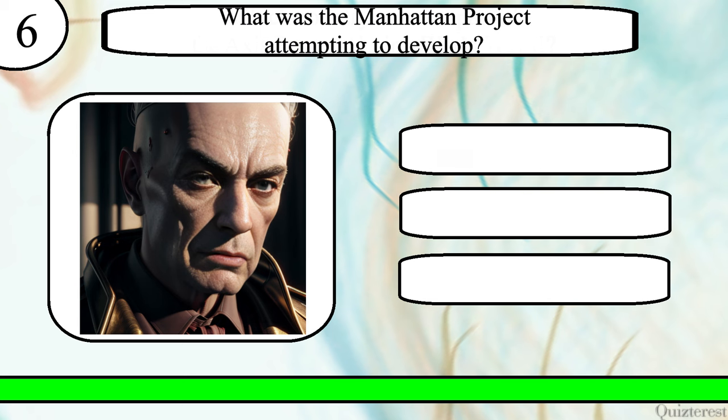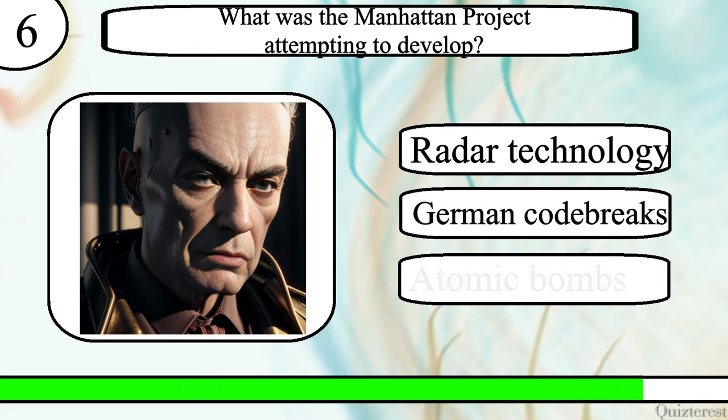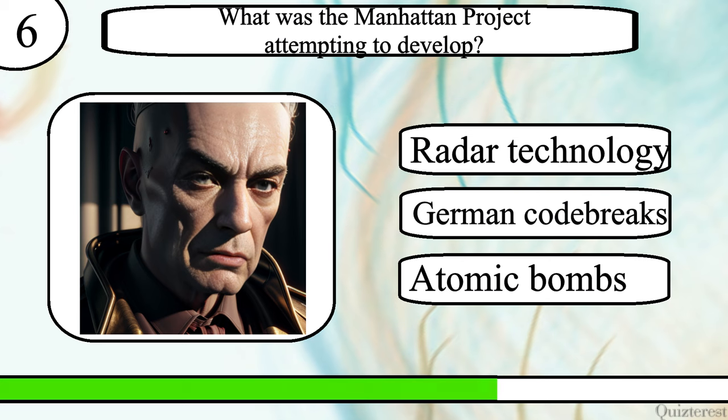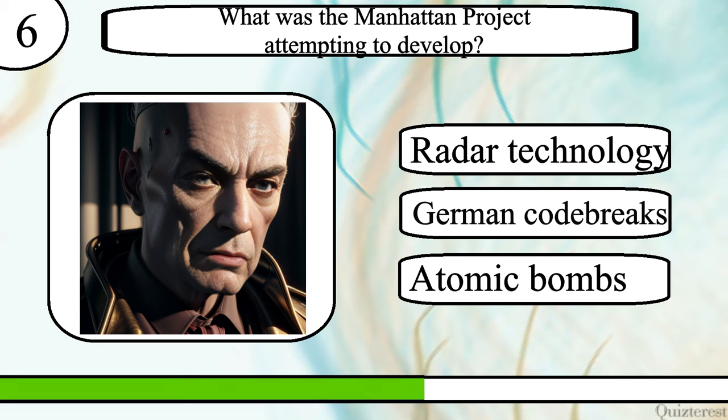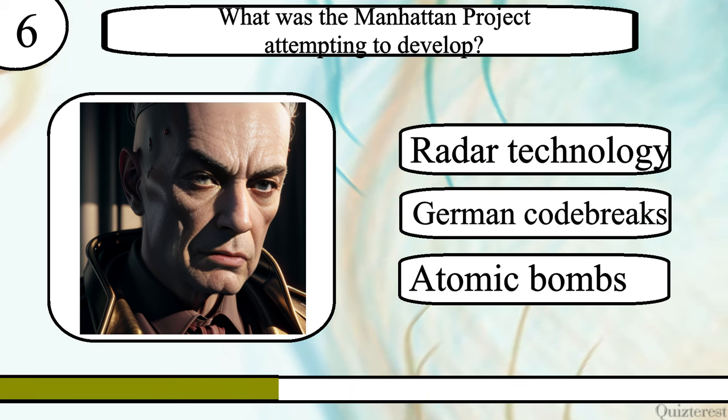Question 6. What was the Manhattan Project attempting to develop? Radar technology, German code breaks, or atomic bombs?